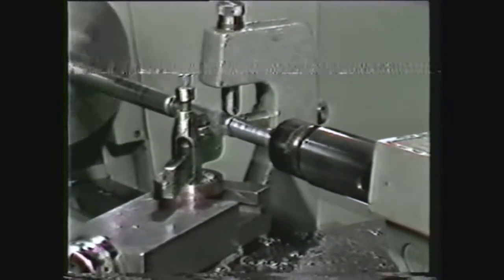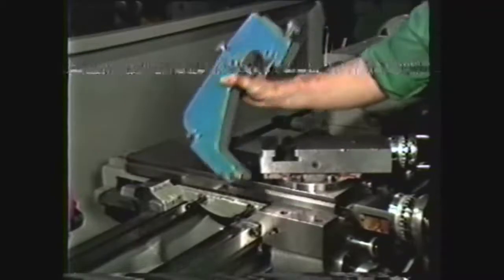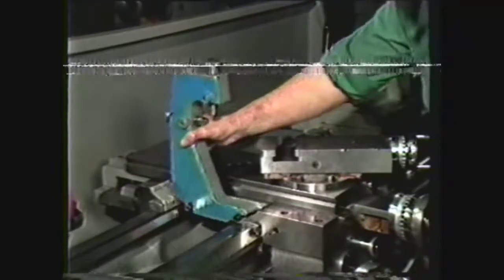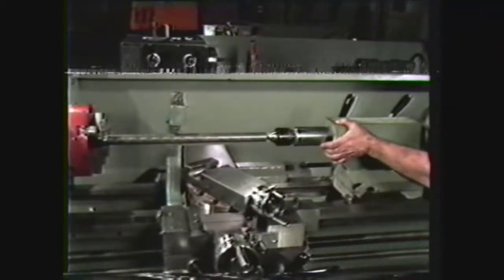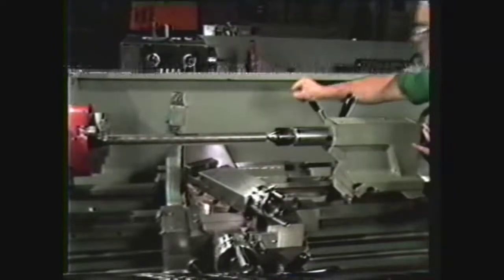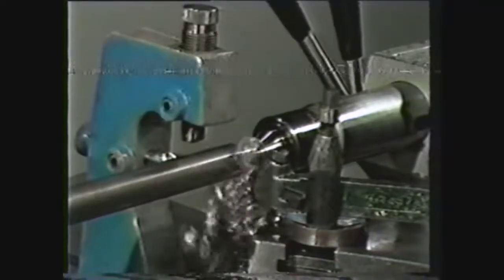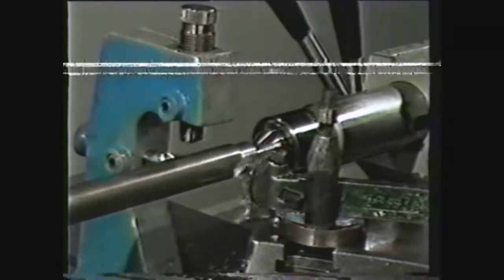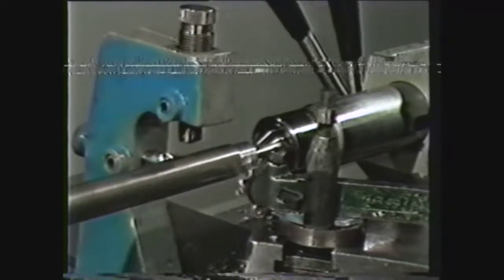To use the follower rest, mount it on the carriage. Mount the work between centers or in a chuck supported by the tailstock center. Set up the tool and take a cut for a short distance from the tailstock end of the work.